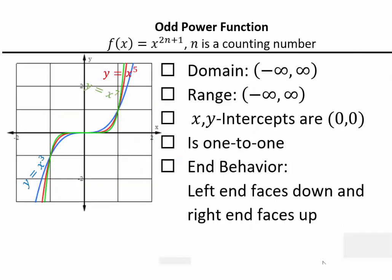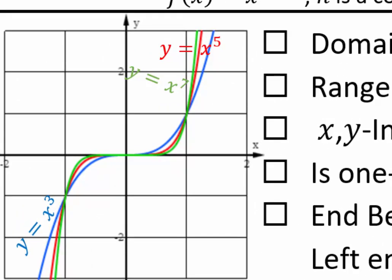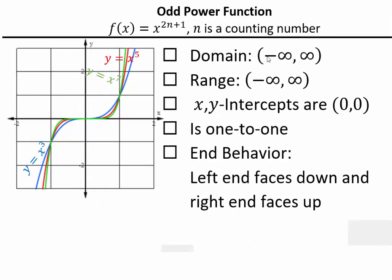For power functions x^(2n+1) — that is x³, x⁵, x⁷, and so on — we get the cubic kind of shape. The domain and range are both (−∞, ∞). All these curves pass through (0,0), (1,1), and (−1,−1). They pass the horizontal line test, so they are one-to-one functions. The end behavior has the left end facing down and the right end facing up.